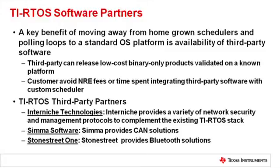We have a number of partners who provide additional connectivity options beyond what's present in TI RTOS, and we've already set some of these up at the introduction of the product. InterNiche Technologies complements our base TCP/IP stack with additional protocols like SNMP for network management or SSH and SSL for network security. For industrial applications needing CAN connectivity, we have SIMR software. And for short-range wireless connectivity, Stone Street One is providing Bluetooth solutions. We'll continue adding more partners to the TI RTOS ecosystem going forward.